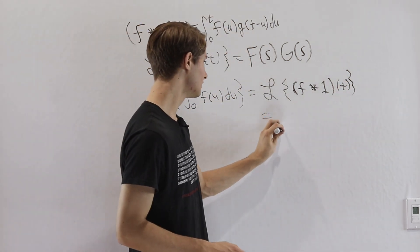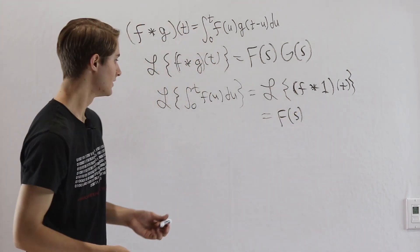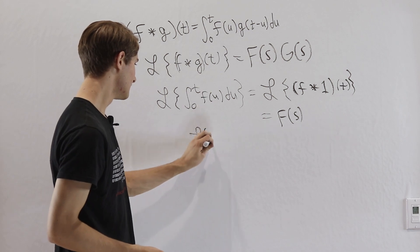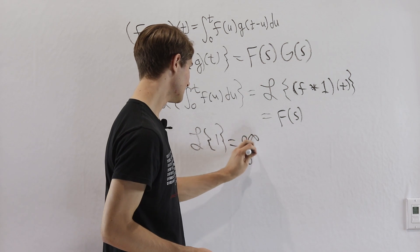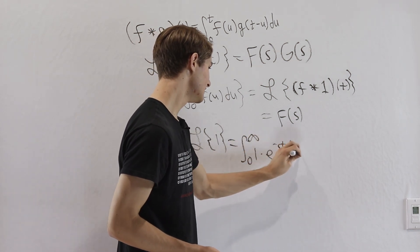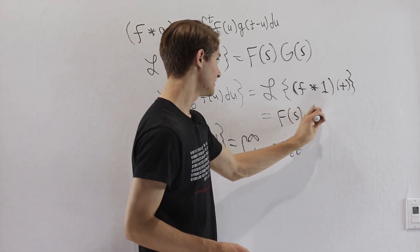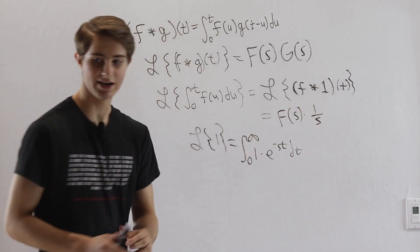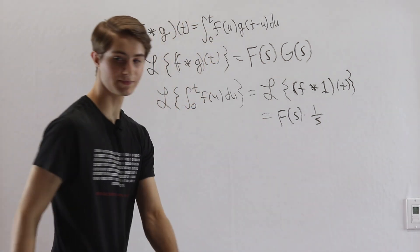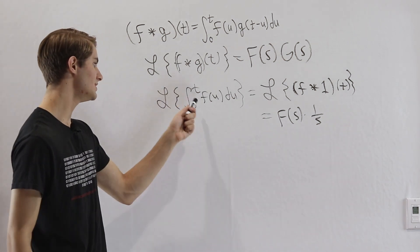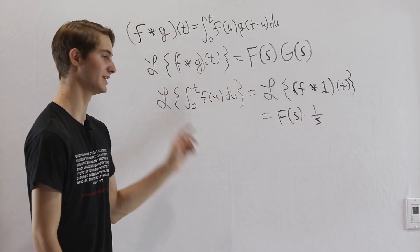Using the convolution theorem, this equals F of s times the Laplace transform of 1. The Laplace transform of 1 is the integral from 0 to infinity of 1 times e to the negative st dt, which evaluates to 1 over s. So the Laplace transform of the integral from 0 to t of f of u du equals F of s times 1 over s.